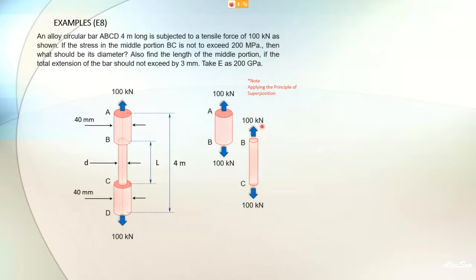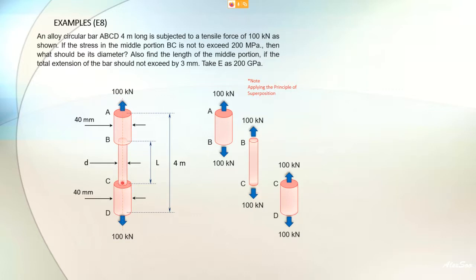For equilibrium of section BC, since this carries 100, a downward force of 100 is needed. For section CD similarly: considering an upward force of 100, we get 100 minus 100 equals zero. So the force acting throughout AB, BC, and CD is the same — 100 kN tensile throughout, because there are no net intermediate forces.